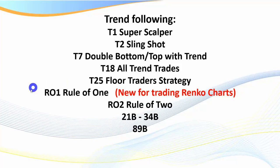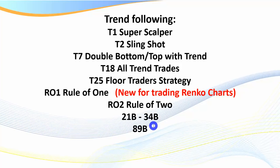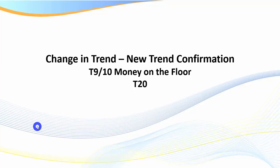For the Rule of Two, the 21B - I don't talk about so much, but you'll hear me refer to it. The rules are the same as the 34 except you're using a 21 instead of a 34. But the number one strategy I want you to master to begin with is the 34B. Remember that: 34B. My second recommendation if you're trading Renko is the Rule of One, provided you follow the rules outlined in the videos and training notes. We also have the 89B as a trend following strategy.